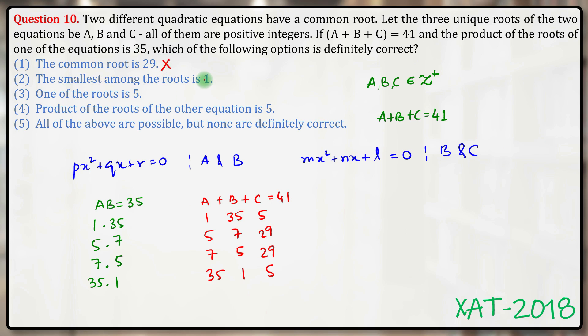The smallest among the roots is 1. While this is true for two cases that the smallest among the roots is 1, it is not true for the other two cases where the smallest among the roots is 5. So again, this is not definitely correct.